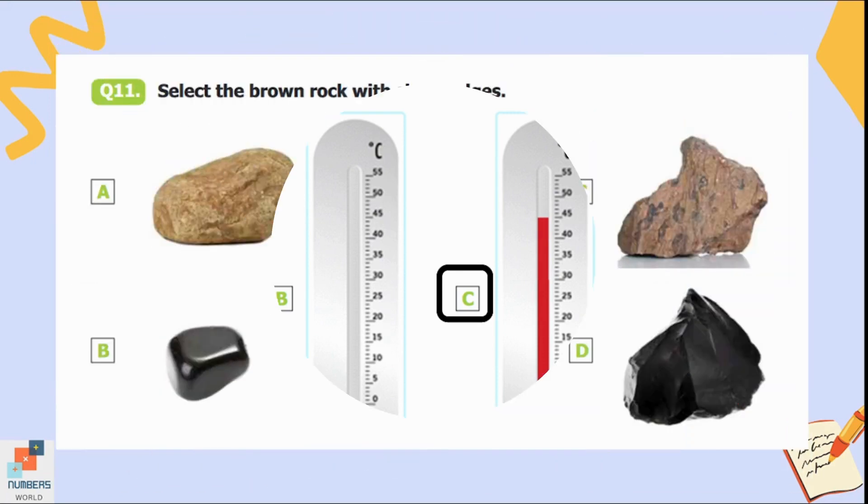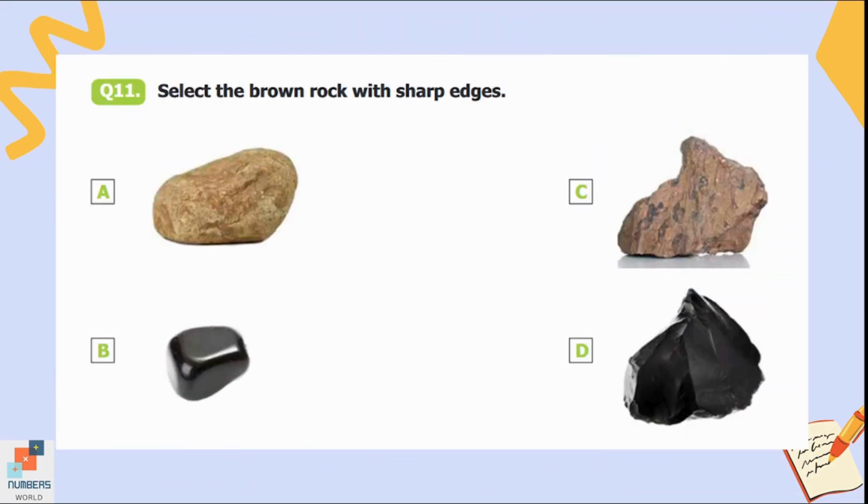Question number eleven: Select the brown rock with sharp edges. We can see black colored rocks in options B and D, and the rocks given in options A and C have brown color. But the edges of the rock given in option C have sharp edges compared to the rock given in option A, so option C is the correct answer.